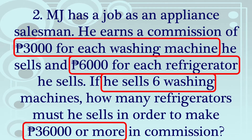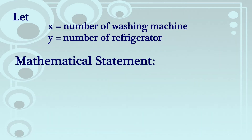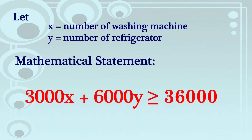Balikan natin yung problem: 3,000 ang commission ng washing machine at 6,000 ang commission ng refrigerator. Kailangan ni MJ na makakuha ng 36,000 or more, so ang inequality na gagamitin natin ay greater than or equal to. So ang ating mathematical statement: 3,000X plus 6,000Y is greater than or equal to 36,000.